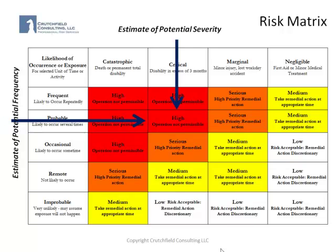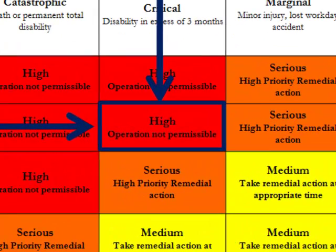The intersection of the potential severity and the potential frequency gives us a rating. In this case, we've assumed a particular situation is probable — in other words, the exposure is likely to occur several times. From discussions with employees and study of our loss history, we believe it could result in a disability in excess of three months. Using the matrix, we identify we have a high risk, and we don't believe the operation should be permitted until controls are put into place or alternatives are developed.